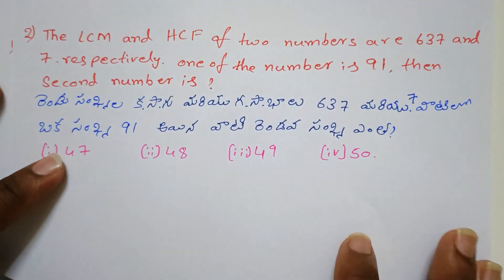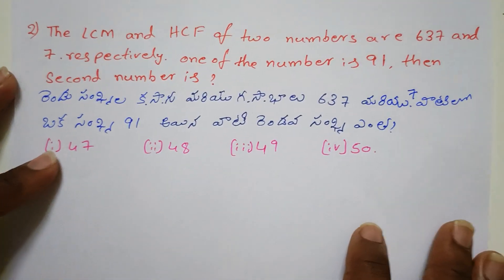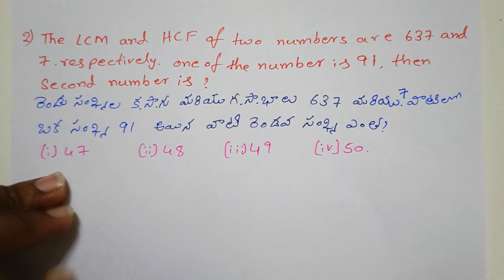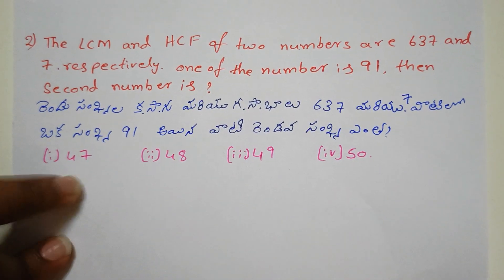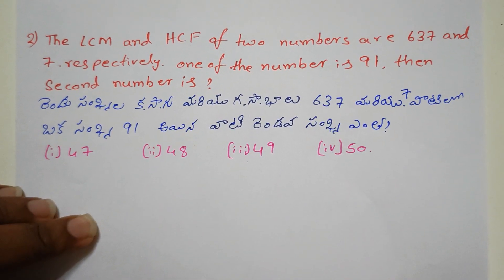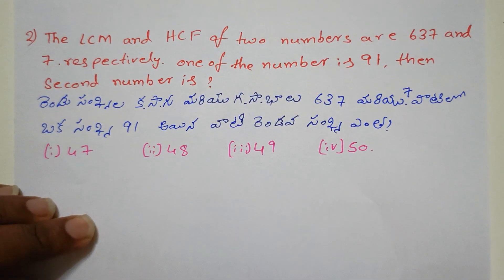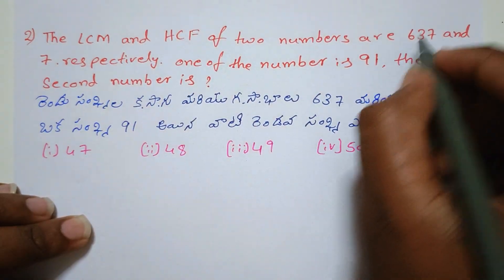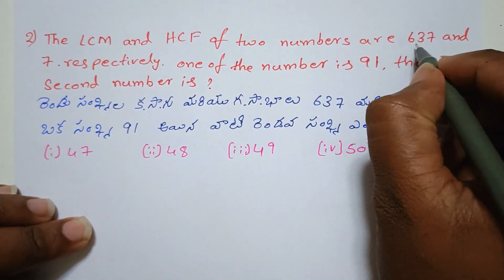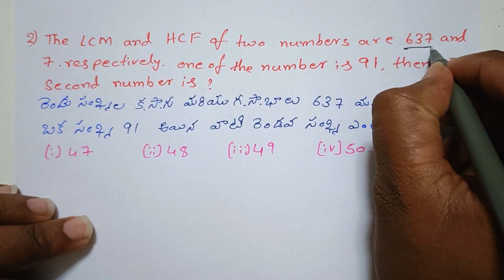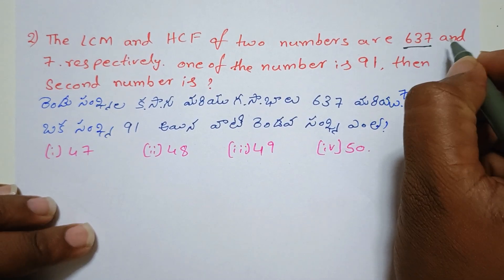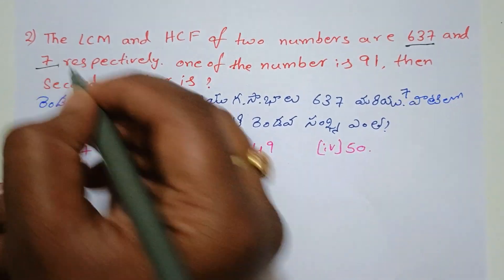Friends, the second question uses the same process. The LCM and HCF of two numbers are 637 and 7 respectively.